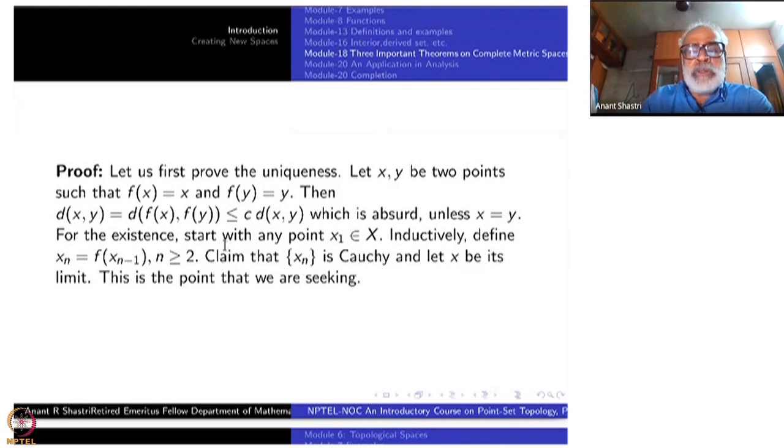So do not give up the method yet. So look deeper into it. Given if you start with x_1 belong to X, inductively define x_n to be the image of f(x_{n-1}). So apply f to that previous one and take that as x_n. So x_1 is any point. x_2 will be f(x_1), x_3 will be f(x_2) and so on. The claim is that this x_n is a Cauchy sequence.